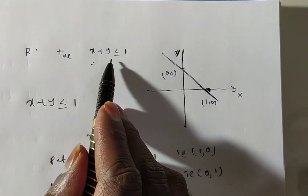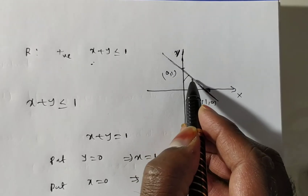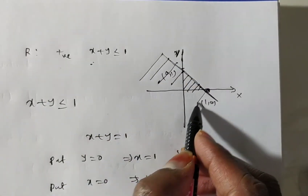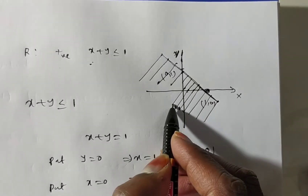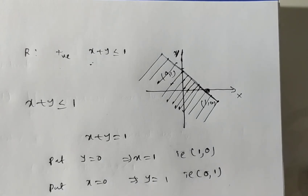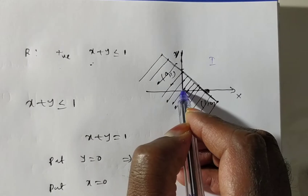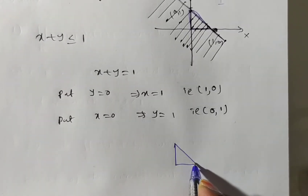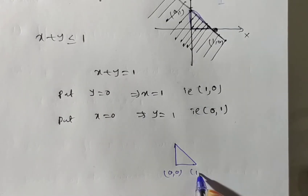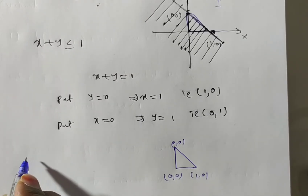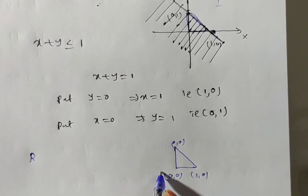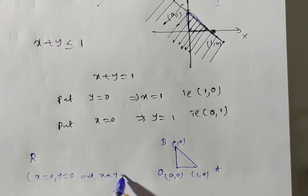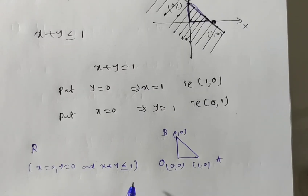Now the region is x plus y less than or equal to 1, and it is in the positive quadrant — meaning the first quadrant only. So the common region is this triangle only. The points on the region are (0,0), (1,0), and (0,1). So the region R is the triangle OAB, where x equal to 0, y equal to 0, and x plus y less than or equal to 1.